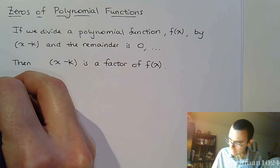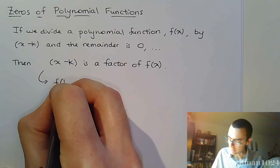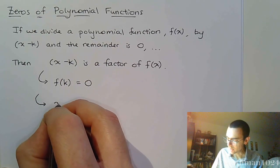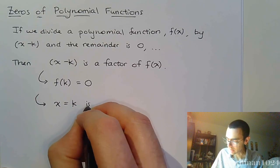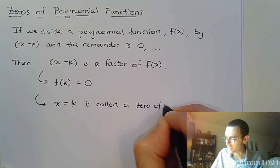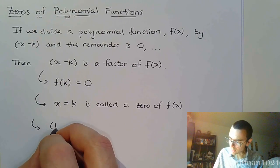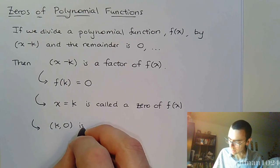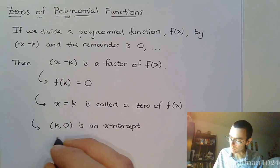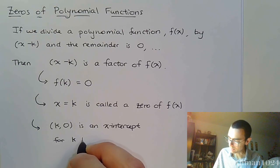It also means that f of k equals zero, which in turn means that x equals k is called a zero of that function f of x. And it also means that the ordered pair (k, 0) is an x-intercept.